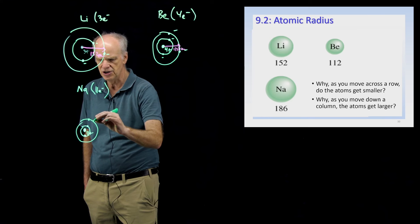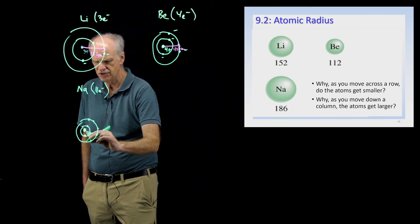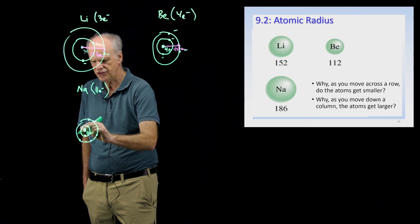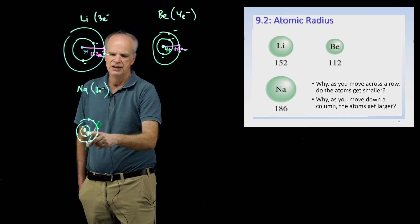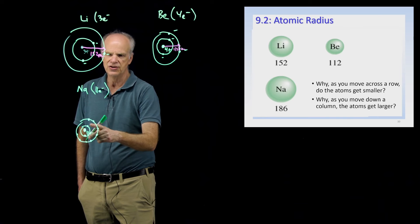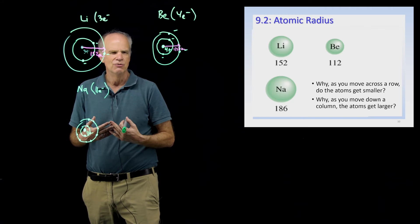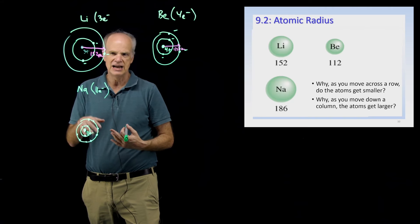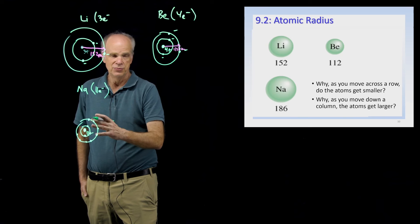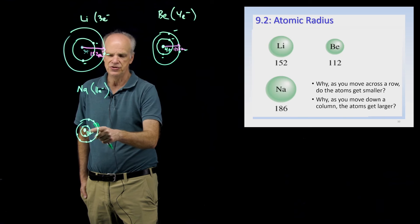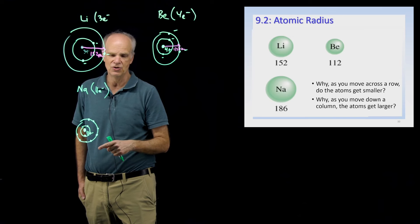Sodium's second energy level is also brought in pretty close to the nucleus, with eight electrons in it. There's going to be a strong force between the second energy level and the nucleus, bringing the second energy level in. So far we've placed ten electrons — two in the first energy level and eight in the second energy level. But we have one more. That eleventh electron goes out into a third energy level, way out here.